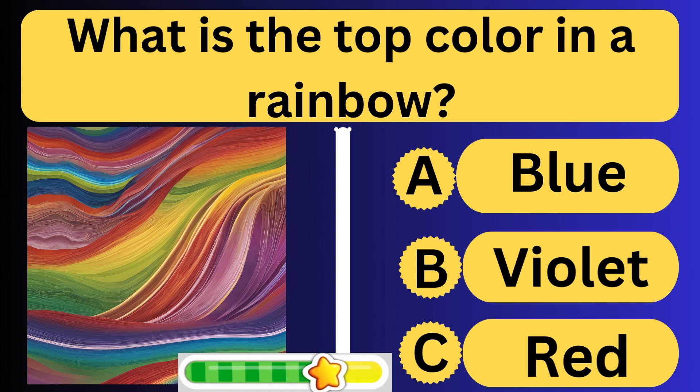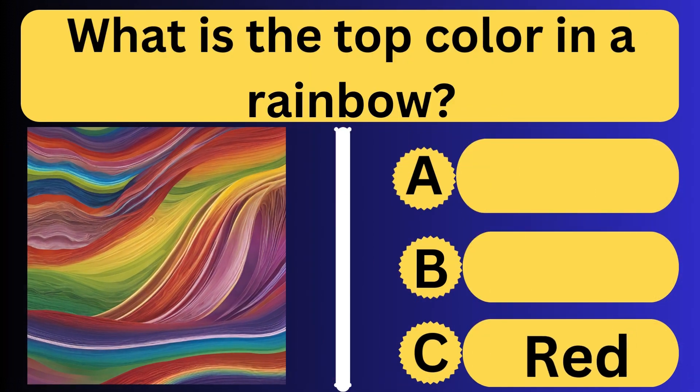What is the top color in a rainbow? The top color in a rainbow is red.